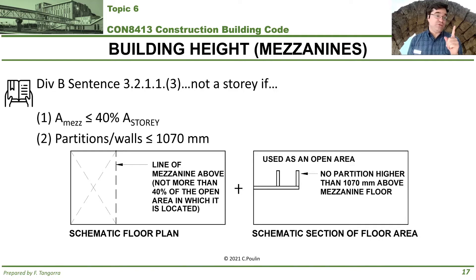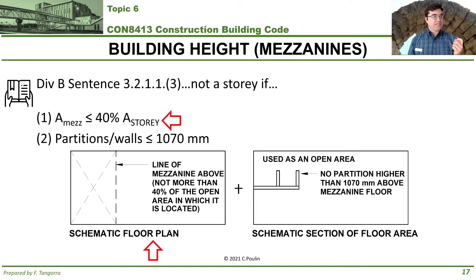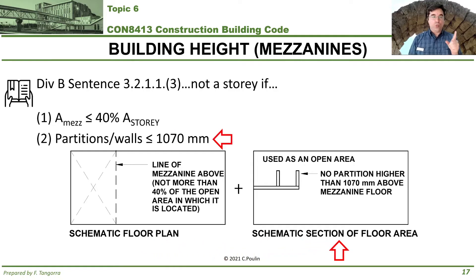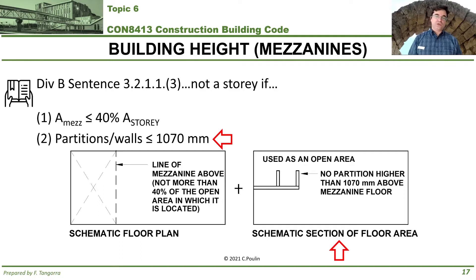If even one of those conditions fails, then it is considered a story. So again: if the area of the mezzanine is less than 40% of the area of the story below — I'm showing here the schematic and floor plan — and, not or, the partitions or walls in that mezzanine are no more than 1070 millimeters, if those two happen together, it's not a story.